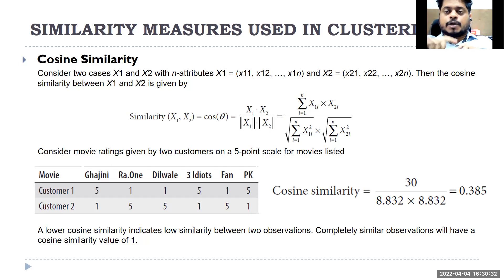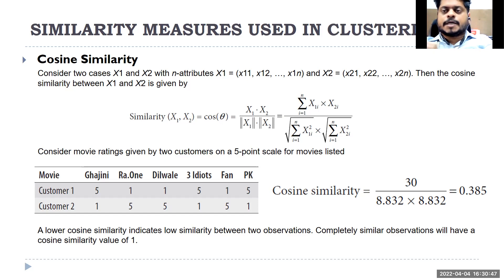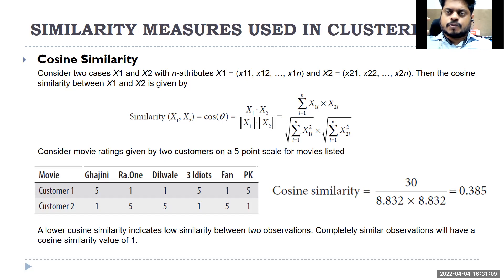Whenever we have consumer feedback data — how they rated a product — think about Zomato or Uber. We are not just looking at whether they purchased or watched, but how they rated it. If I have that kind of numeric feedback data, rather than only looking at similarity, I also look at how they liked or disliked it. Whenever you have data in numeric, metric, or interval format, you can use something called cosine similarity.